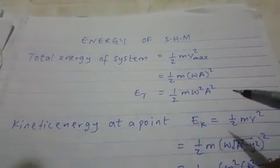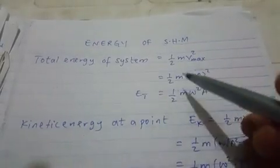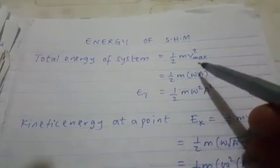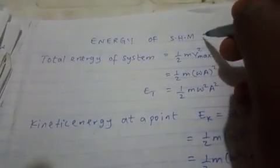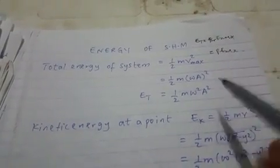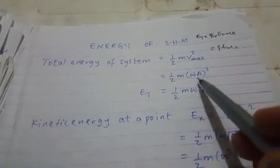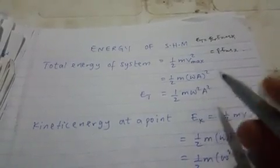In this video we are going to look at the energy of simple harmonic motion. The total energy of the system is half mv squared maximum — that's the maximum kinetic energy. According to conservation of energy, total energy equals maximum kinetic energy, which also equals maximum PE, which is half mv squared maximum. Since v maximum equals omega times a, this gives us half m omega squared a squared — that's the formula for the total energy of a simple harmonic motion.